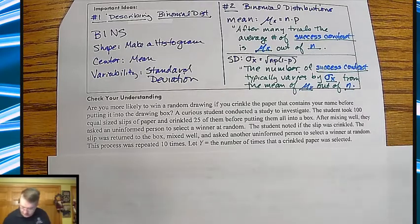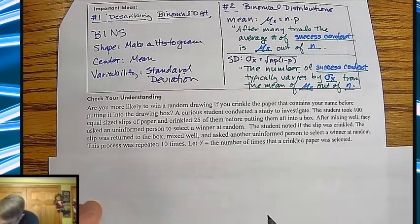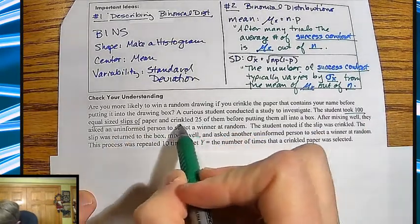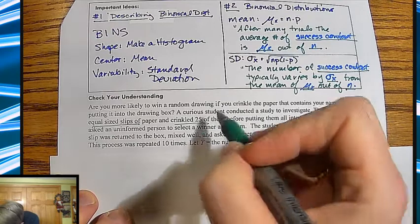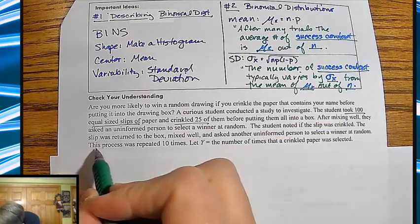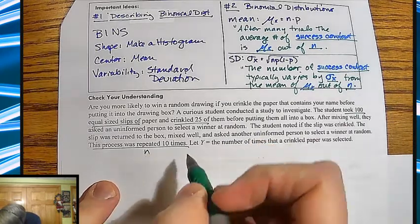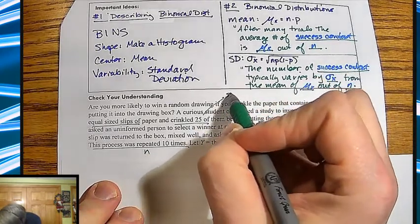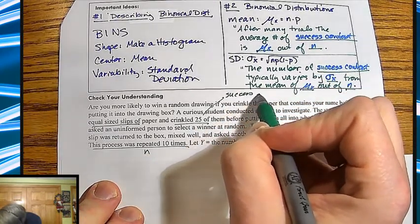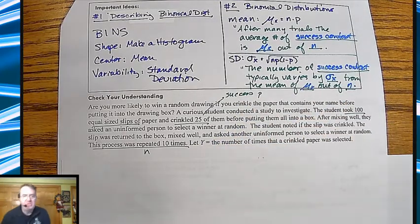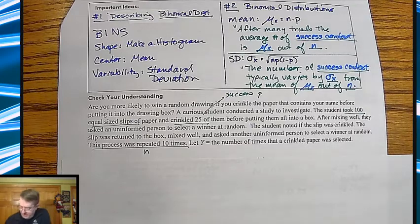So one thing that you should go through and do here is mark a couple of these things. Student took 100 equal size slips of paper, crinkled 25 of them, because again, that's going to be your success. Process was repeated N times. So this is, or 10 times. So this is N. This is success. Probability. And that type of thing as you go through and critically read it, it can help you as you go through and do it.